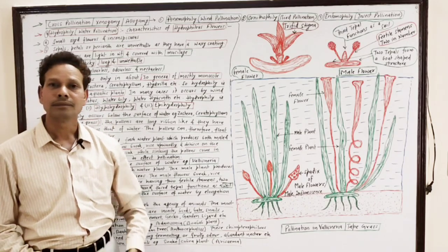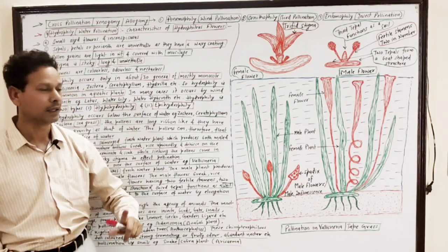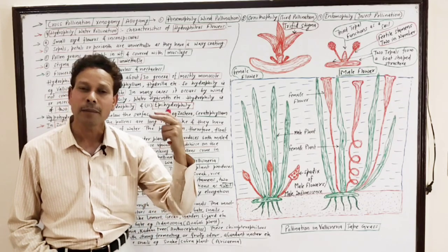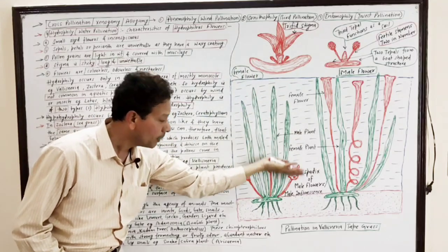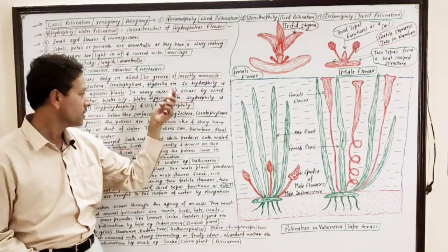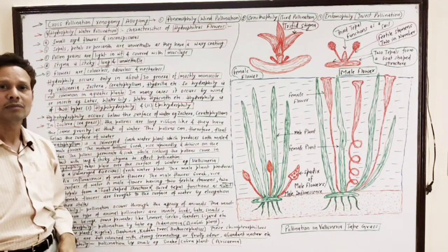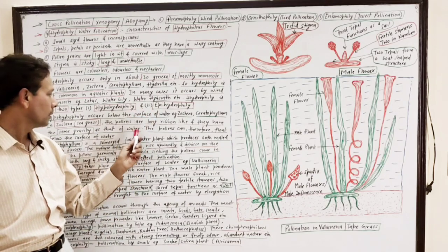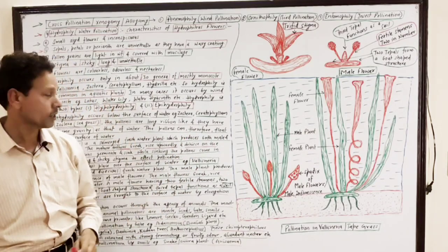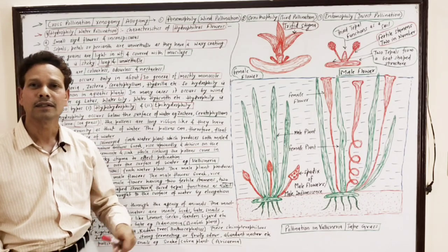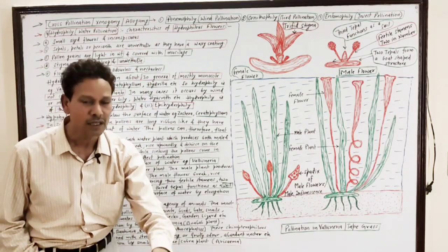Water pollination or hydrophily has two types: hypohydrophily and epihydrophily. As the name indicates, in hypohydrophily, pollination occurs below the surface of water. Hypohydrophily is a characteristic feature of Zostera, which is a seagrass, and in Ceratophyllum, which is a freshwater aquatic plant. In the case of Zostera seagrass, which is a marine submerged plant, the plant body remains inside water.